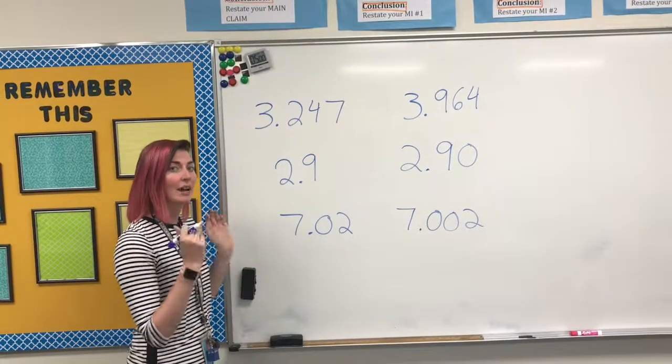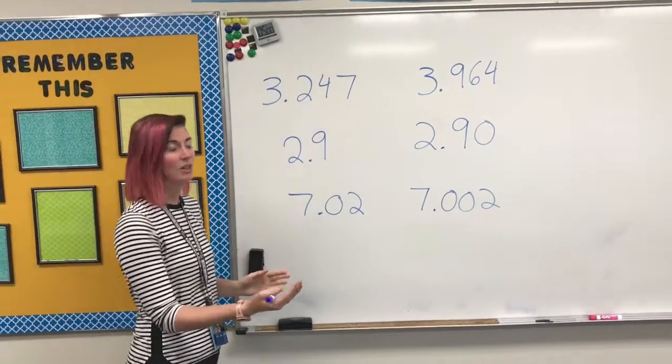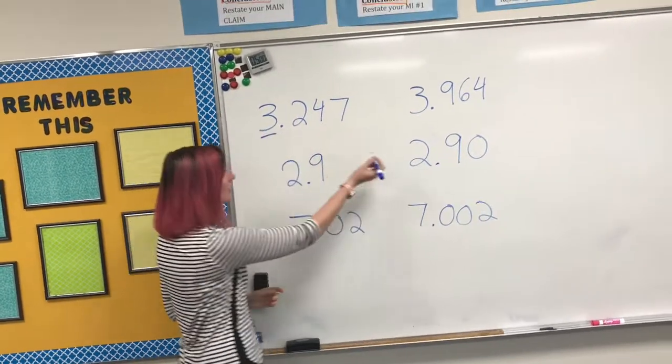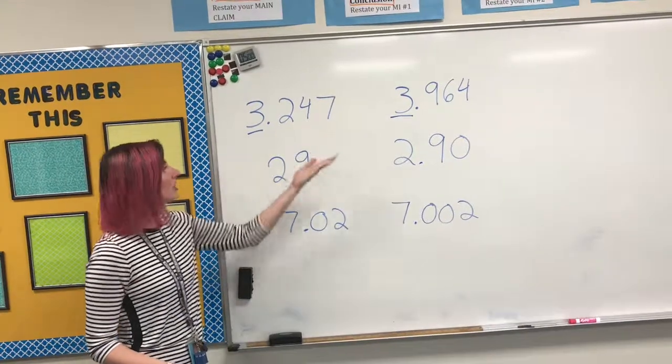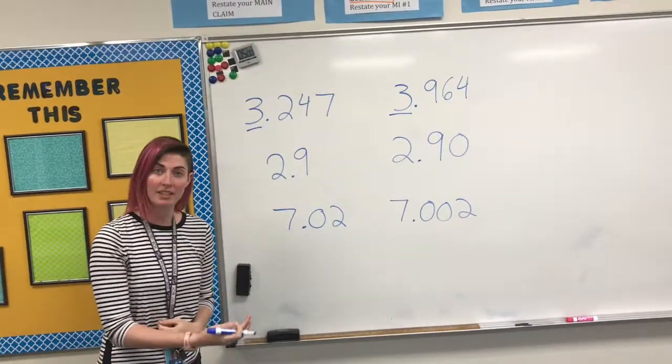When we're comparing decimals, we want to look at place value by place value. So first we're going to look at the very first number in the ones place. 3 and 3, they're both the same, so we're moving on to the next place value.